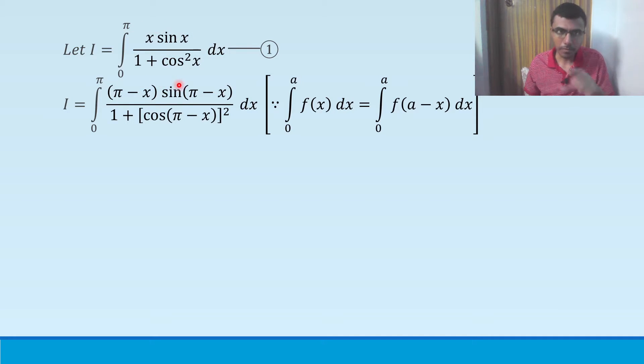In the first step, wherever you see x, in that place you can write pi minus x. So in place of x I wrote pi minus x. Here also sin x is there, I wrote sin of pi minus x. Here also you see cos square x, basically cos of x whole square. So in place of cos x, I wrote cos of pi minus x whole square.